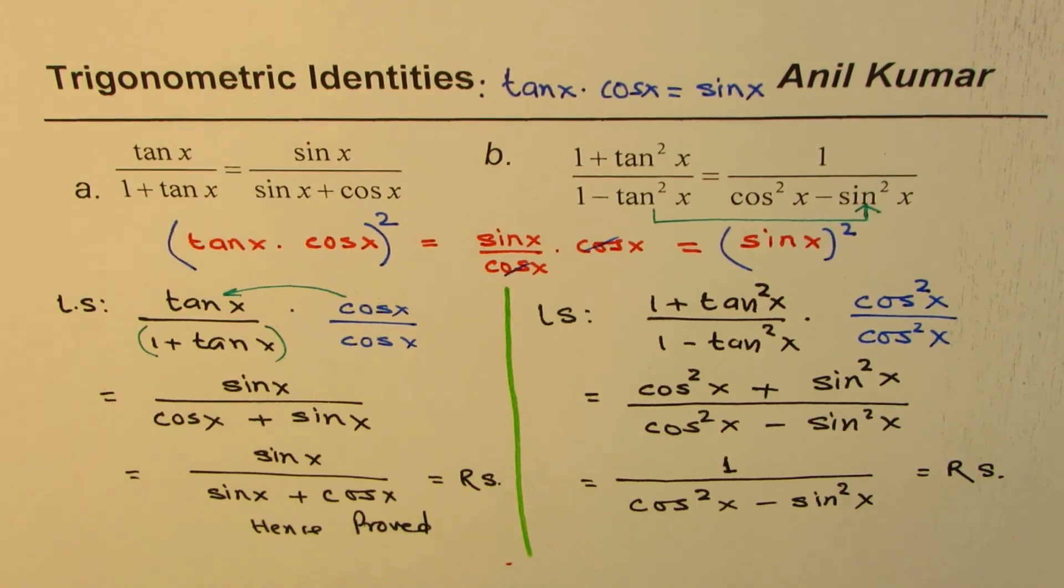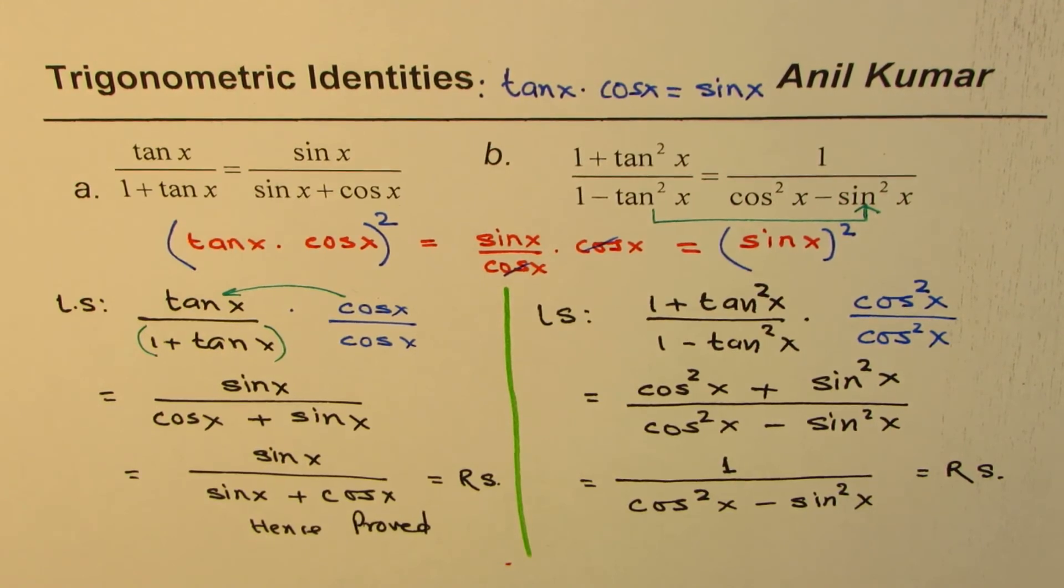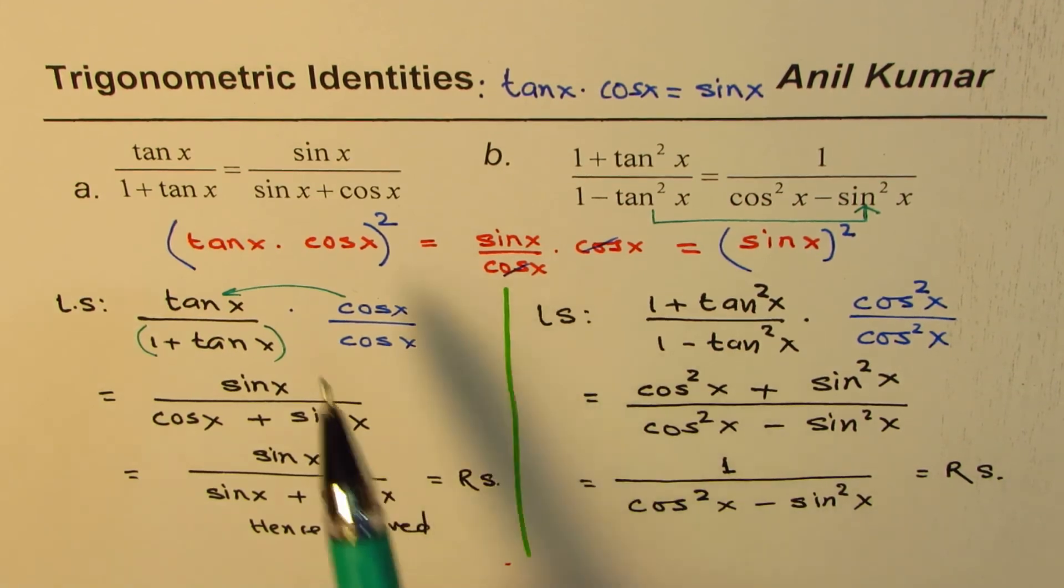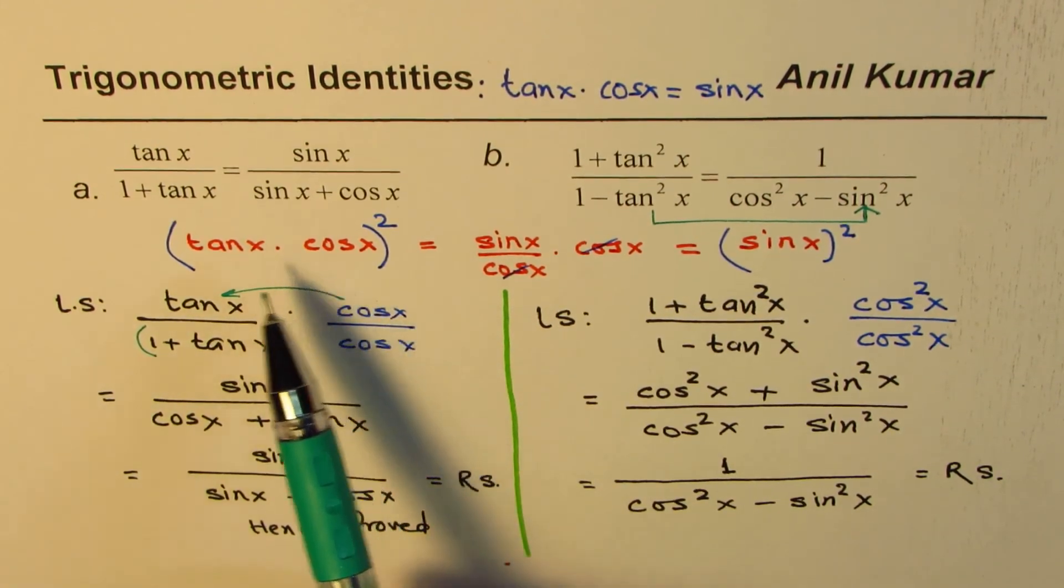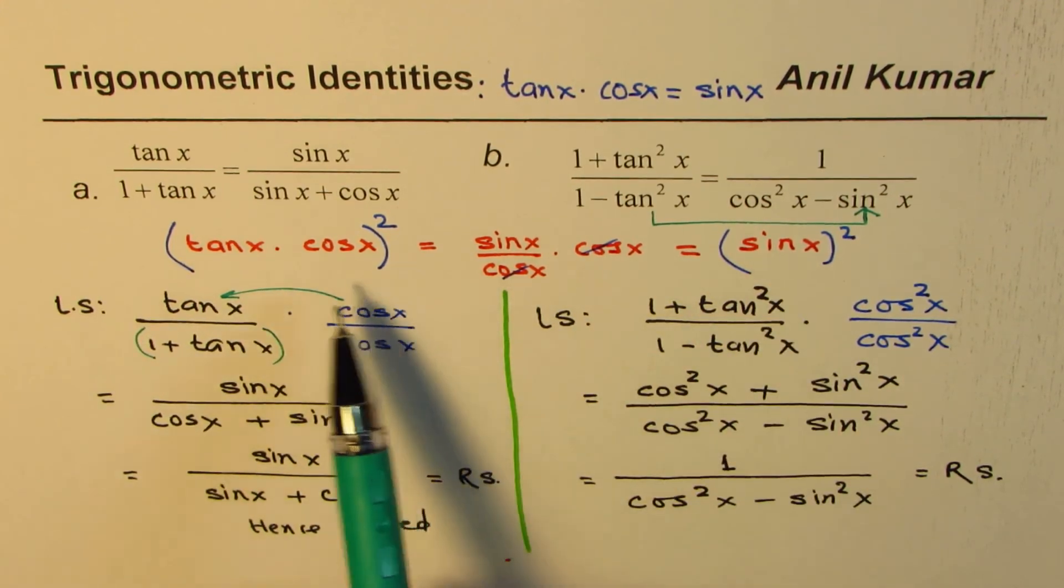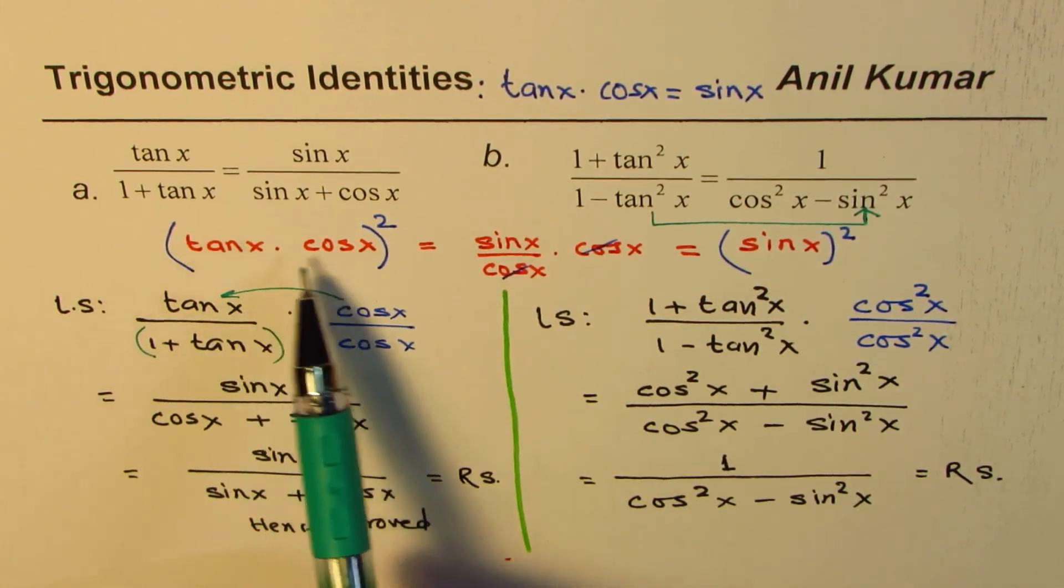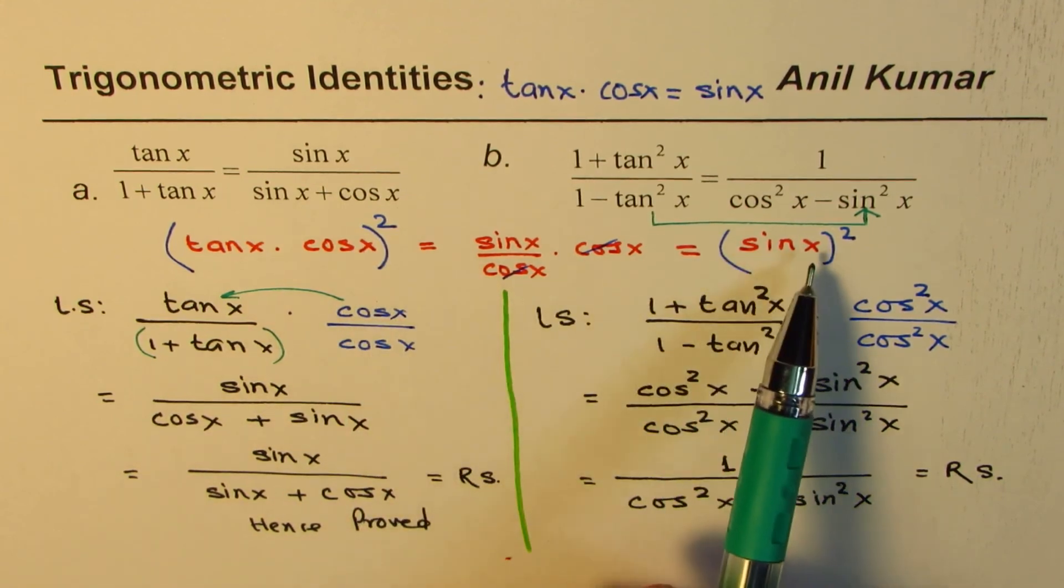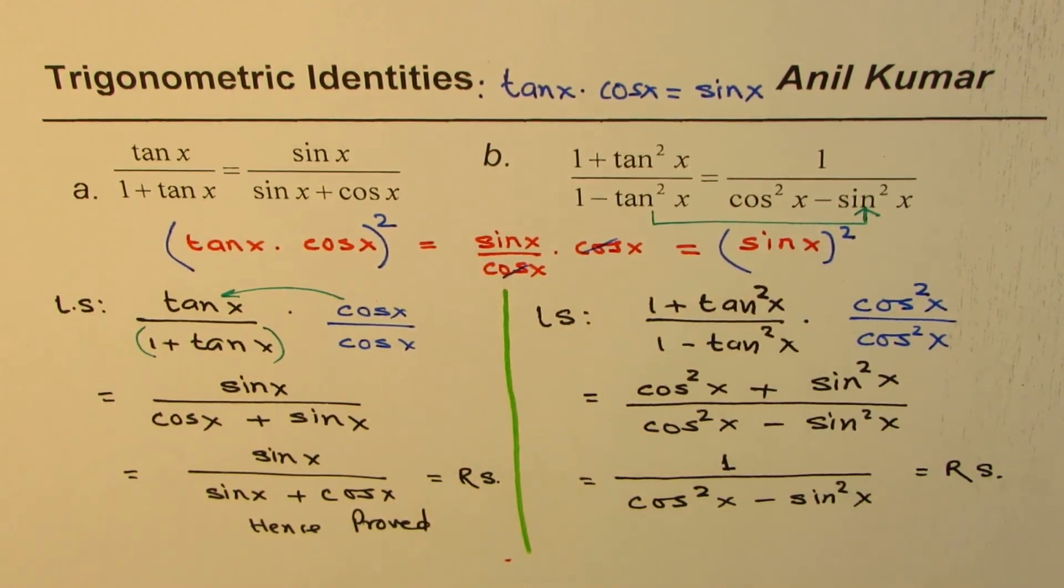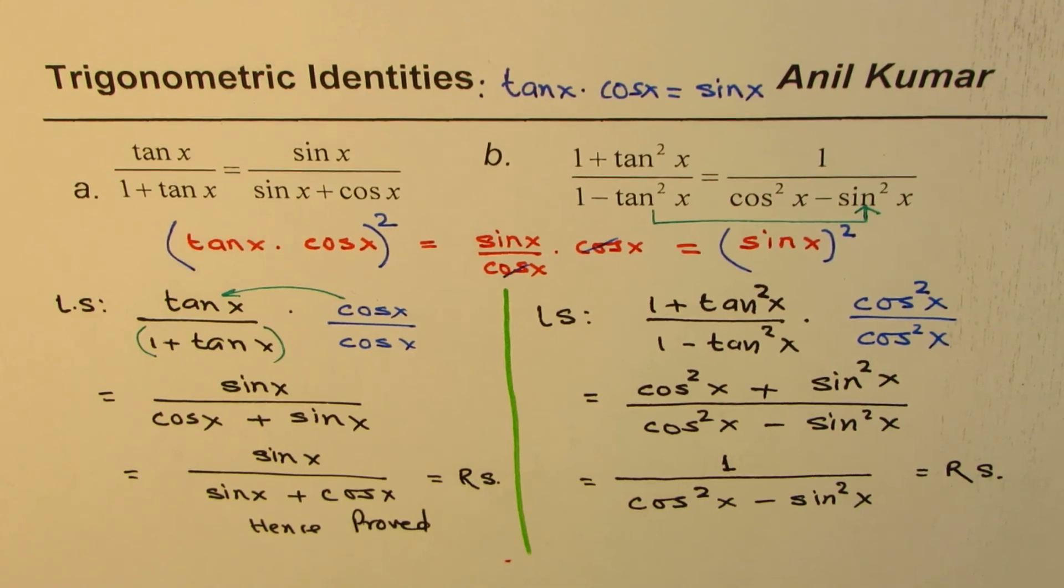Do you get the idea? So, trigonometric identity is real fun. If you go with me, you'll really enjoy it, and no question will be difficult for you to solve. I hope you understand and appreciate this simple technique. Tan x times cos x is sin x. Tan square x times cos square x will be sin square x, and so on. You can always use it very effectively to prove trigonometric identities.